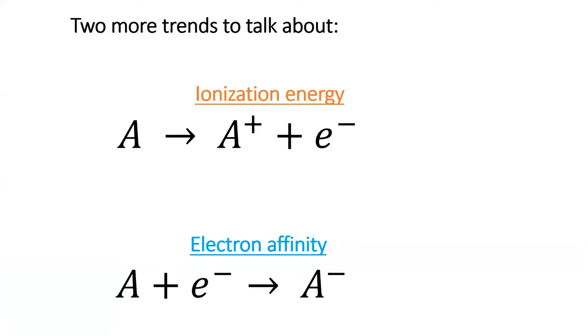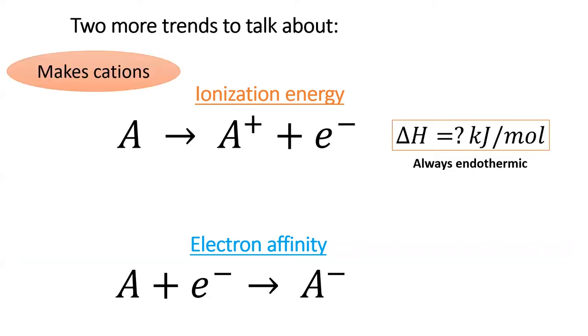This section and the next both involve the creation of ions by transfer of an electron. We have two different terms for this process depending on whether we are adding or removing an electron. This section will discuss the energy required to pull an electron away from an atom to form a cation. This process is always endothermic since it involves pulling a negative charge away from a positive charge.